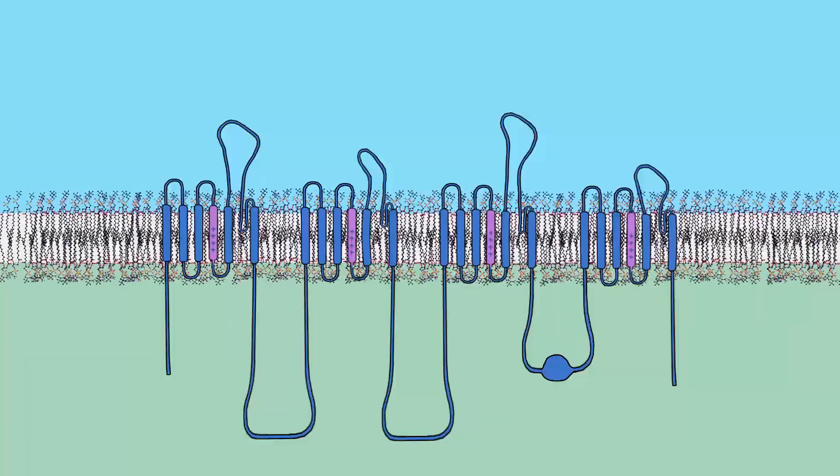The sodium channel is composed of a single protein that crosses the membrane 24 times. Four of these segments have a positive charge due to their rich content in arginines, which contain a positive charge.